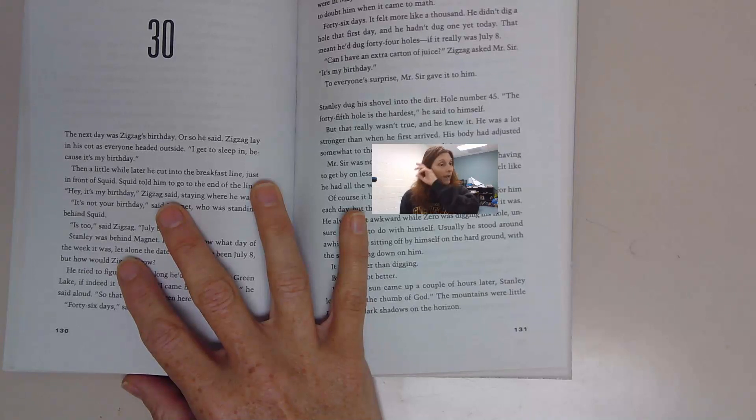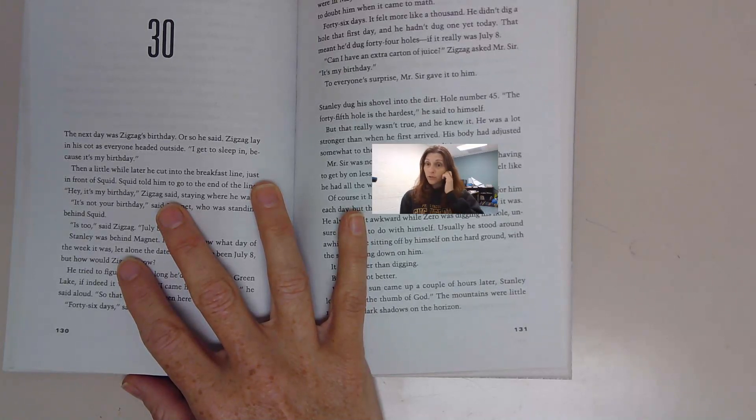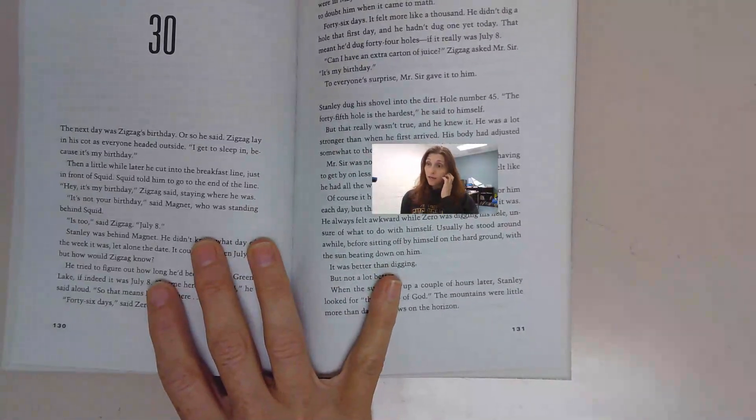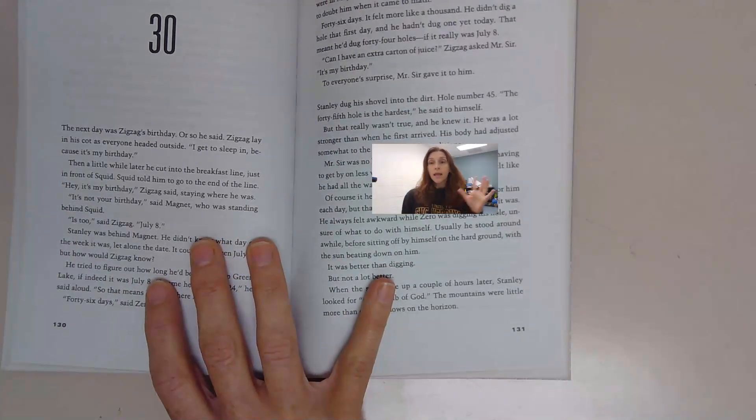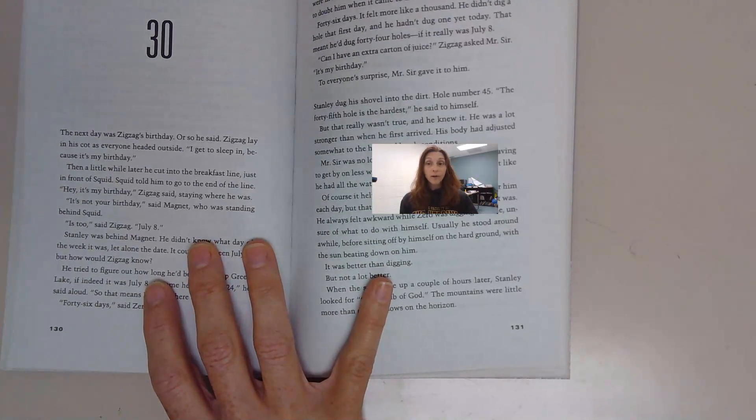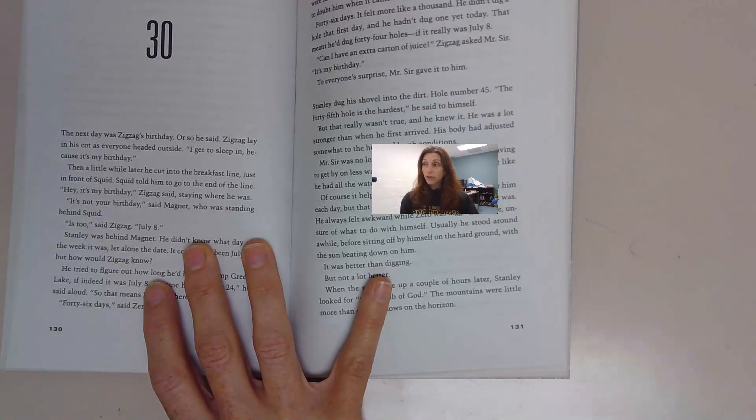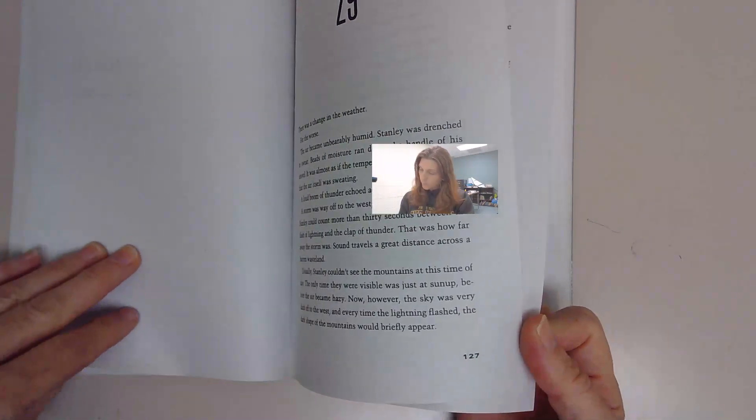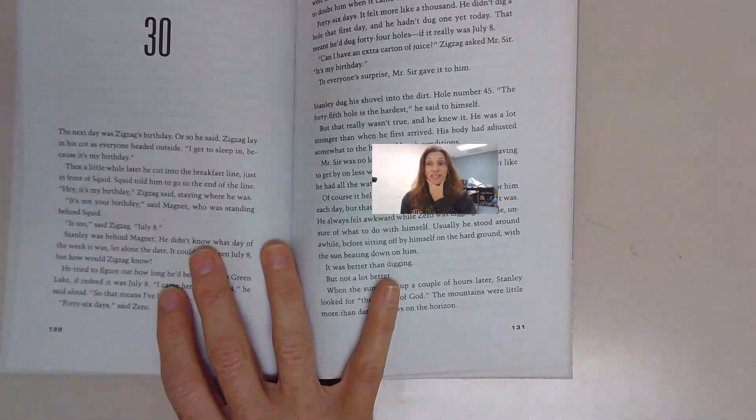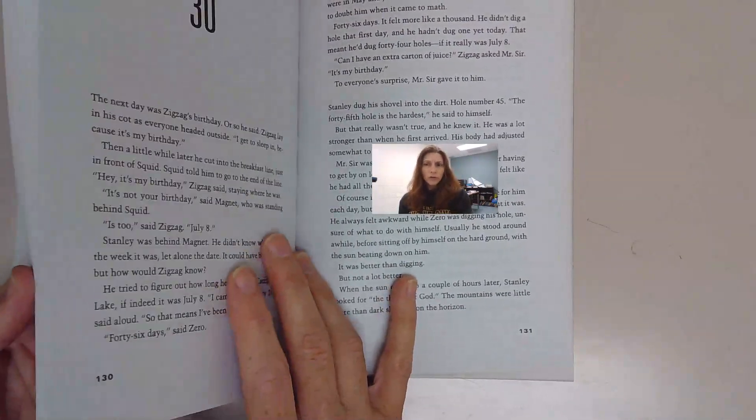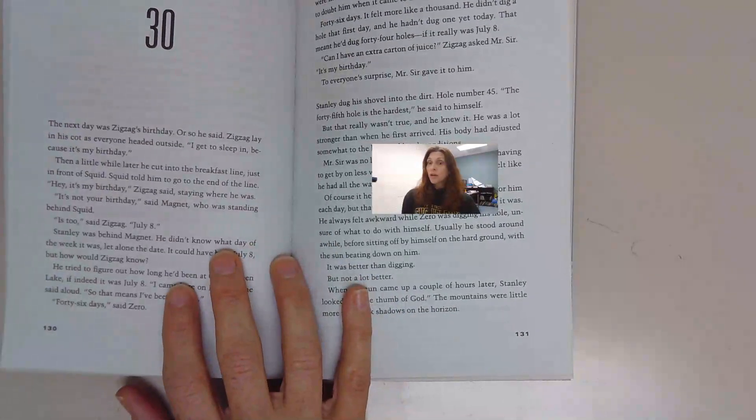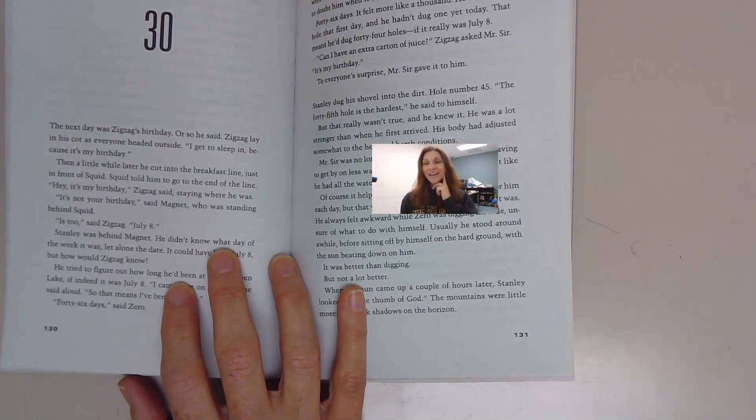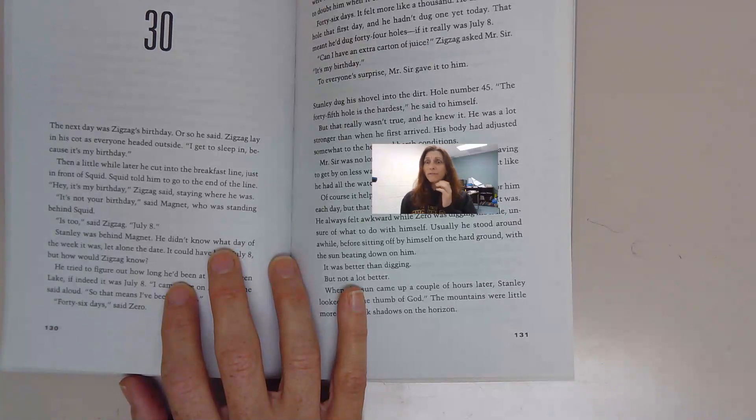She then went back to the original spot, Camp Green Lake, which was no longer a lake. It had dried up and she was living in a cabin. While she was there, Trout Walker and his wife came and demanded that she tell them where all her loot was. She didn't, so they started digging holes, trying to find this gold or money.